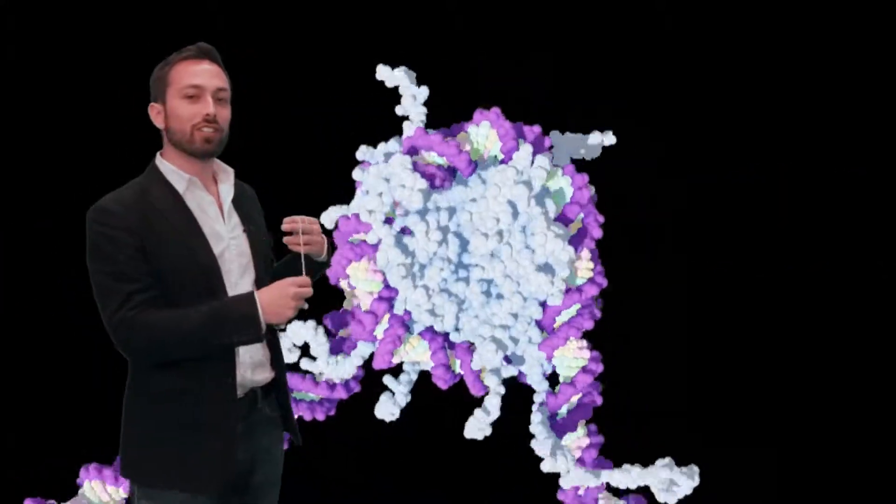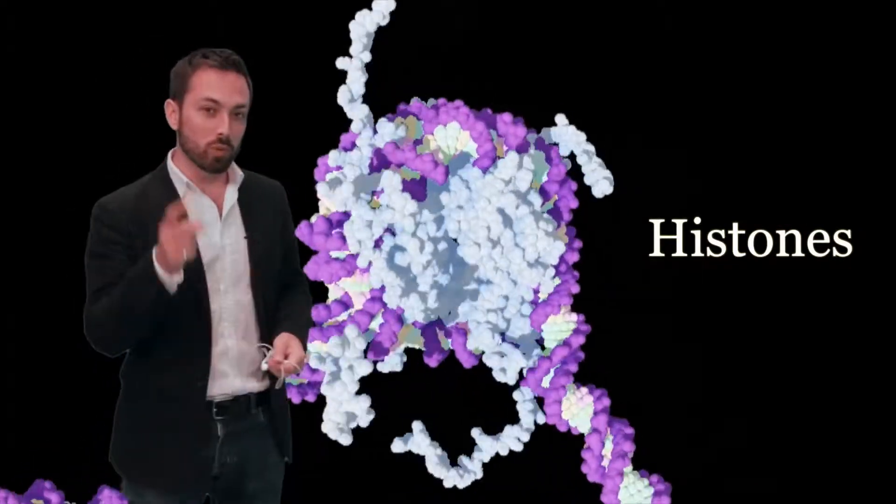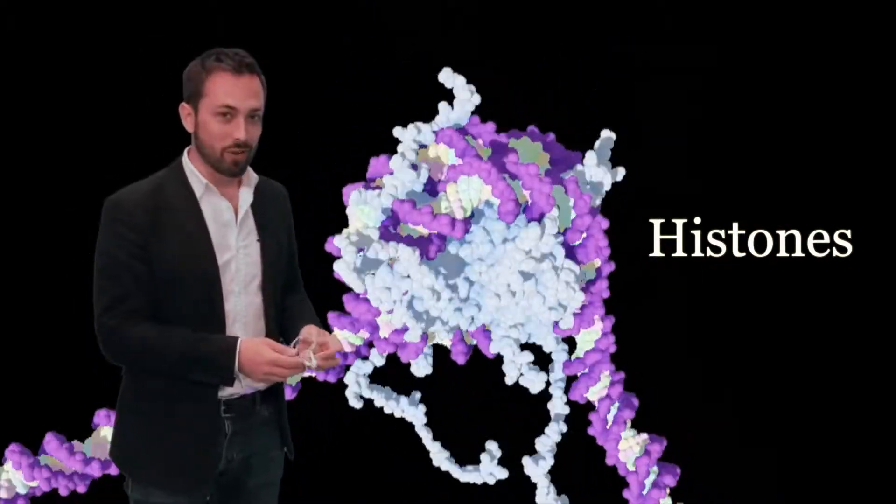So the DNA is actually wrapped around proteins called histones. Now those histones have wiggly tails, which will come in handy, as we'll see in a moment.